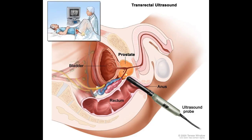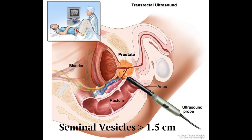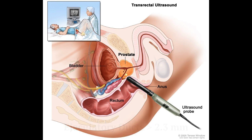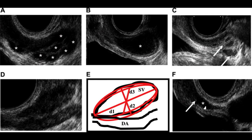A transrectal ultrasound may demonstrate dilated seminal vesicles more than 1.5 centimeters in width, or dilated ejaculatory ducts greater than 2.3 millimeters in association with a cyst, calcification, or stones along the duct.